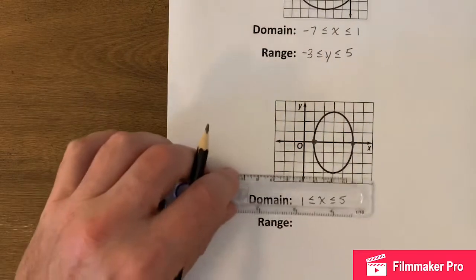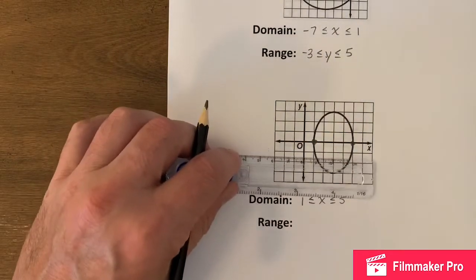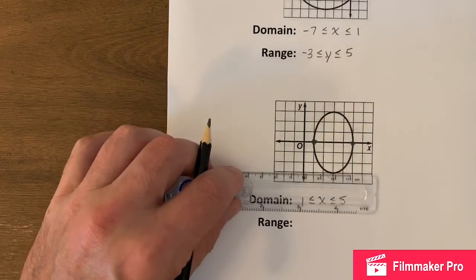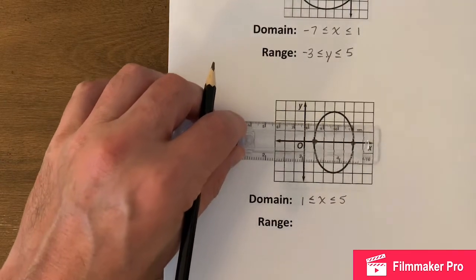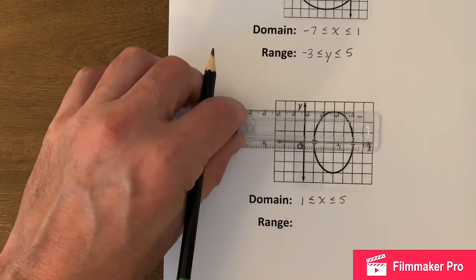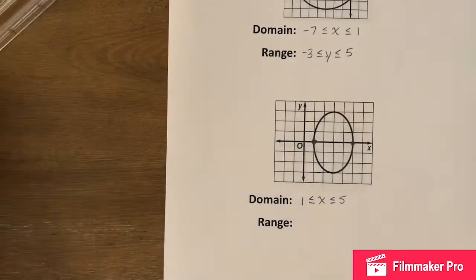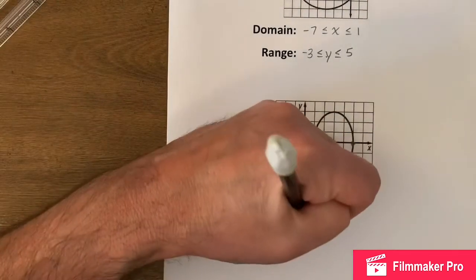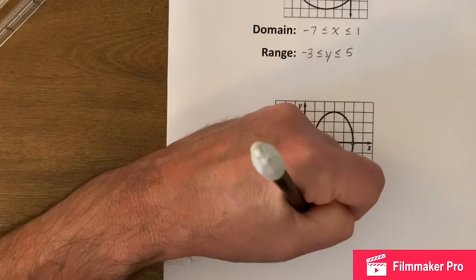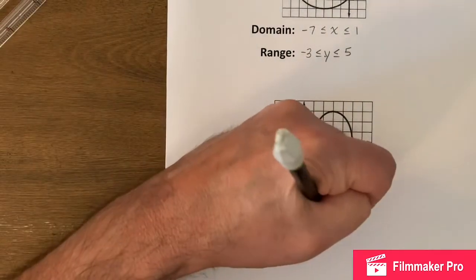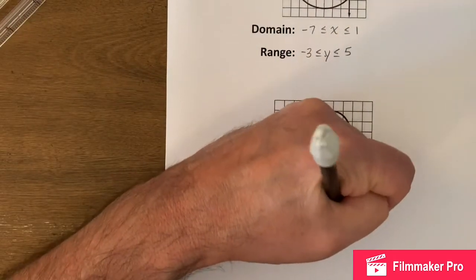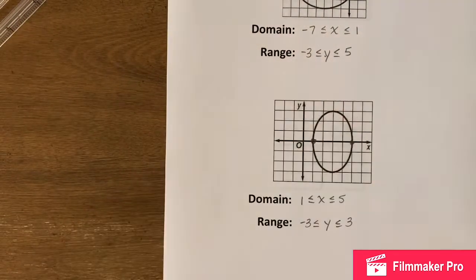For the range of the ellipse, it looks like it goes from negative three up to positive three: negative three less than or equal to y less than or equal to three.